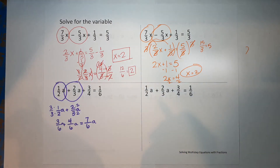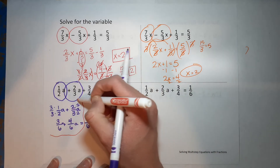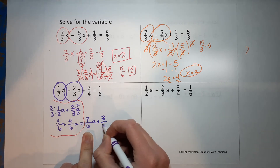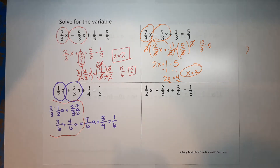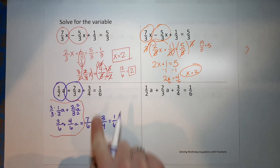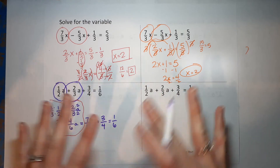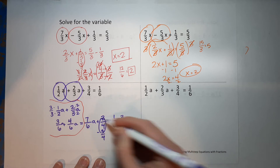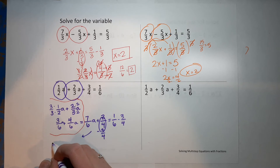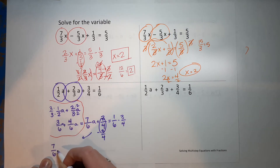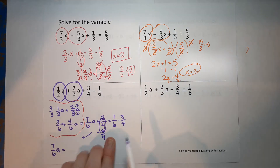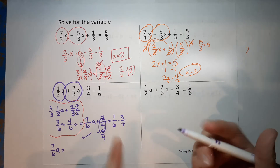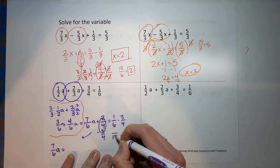So combining like terms brought us down to 7/6 a, and we're still adding 3/4, which equals 1/6. These aren't like terms so I can't combine them. My whole goal is to get a alone, so I'm going to subtract 3/4 from both sides of the equal sign. Those go away and I'm left with 7/6 a equals 1/6 minus 3/4. The smallest number both 6 and 4 go into is 12.